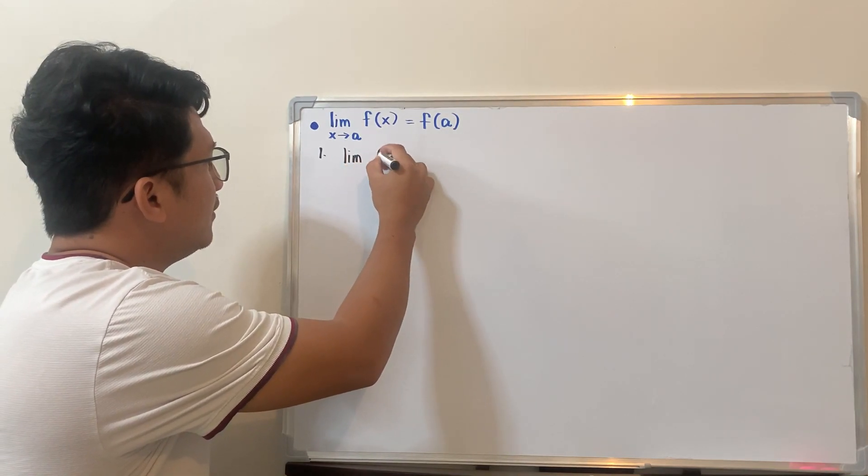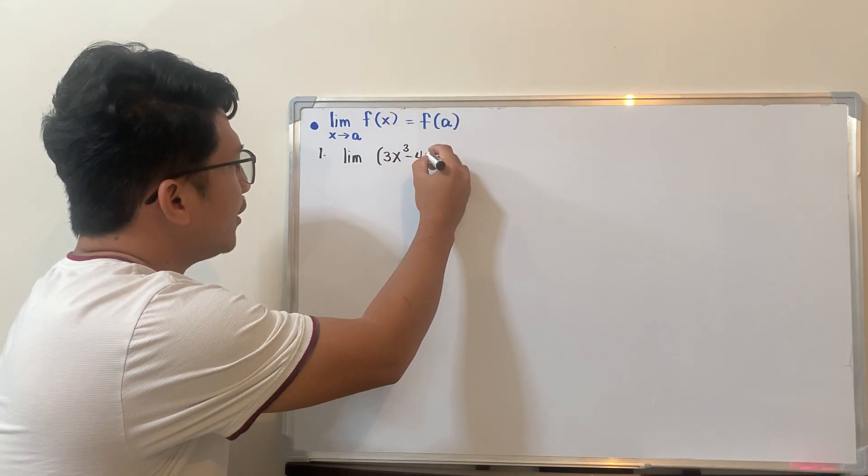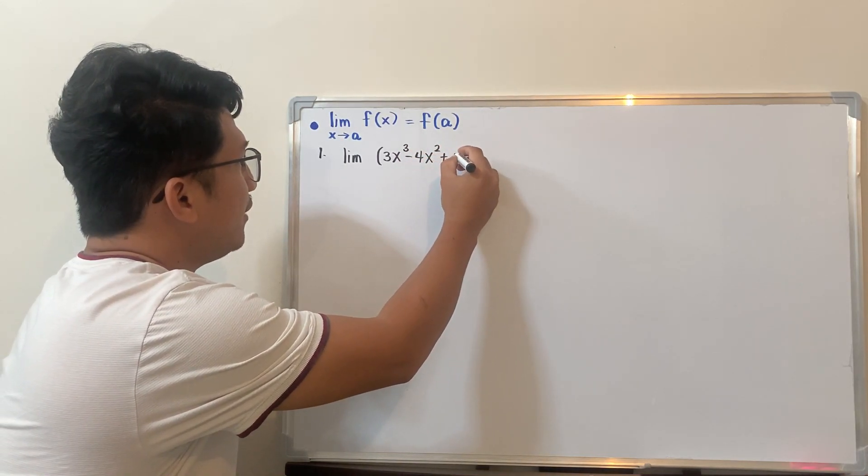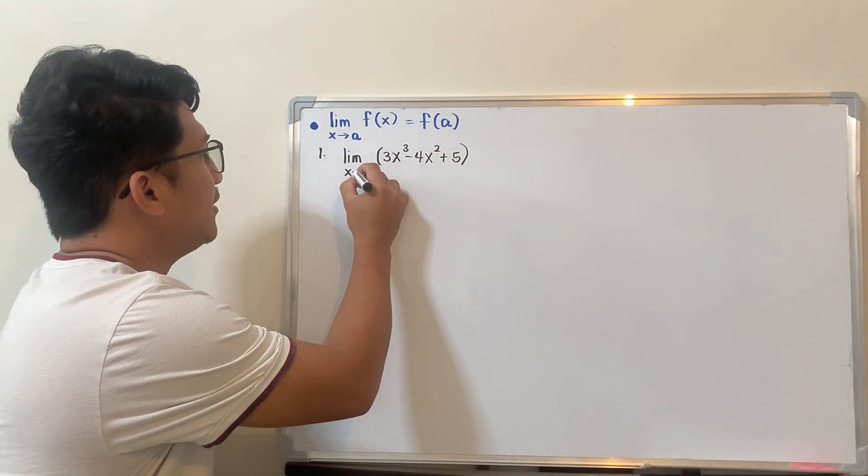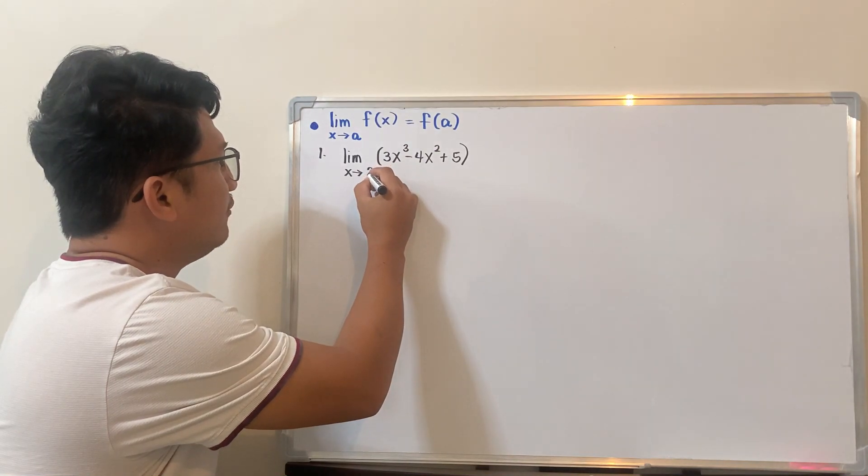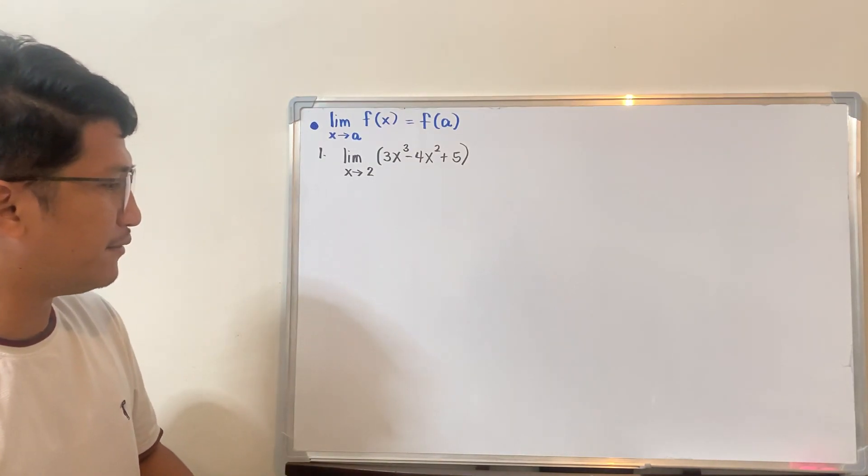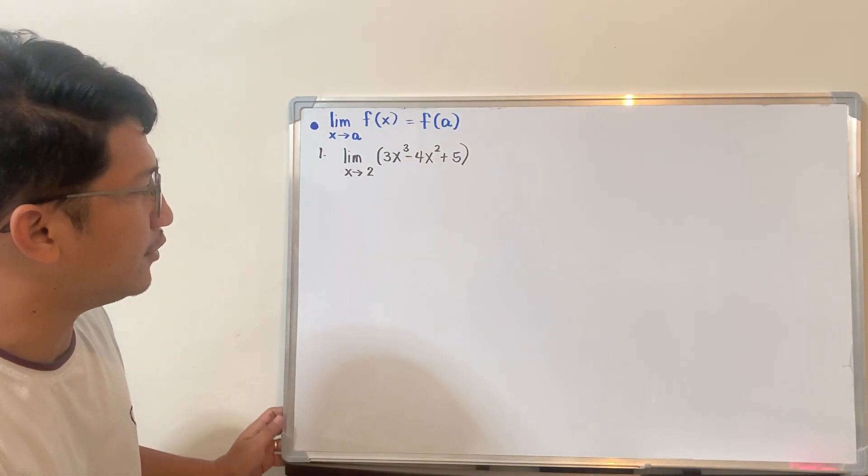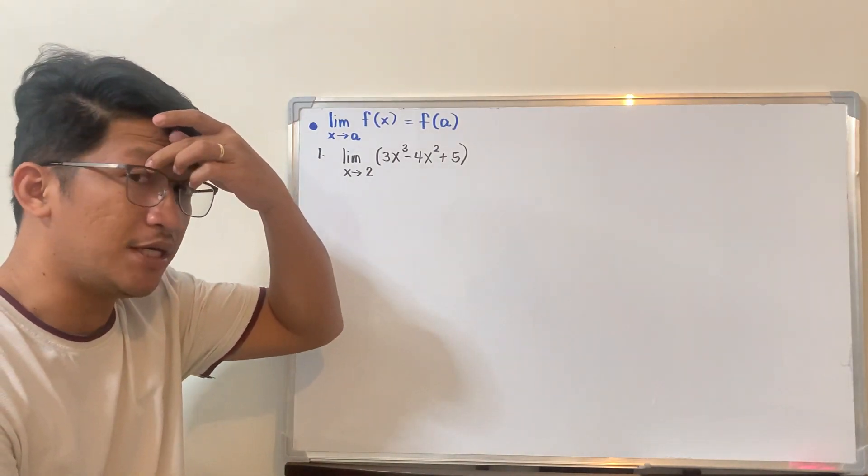3x cubed, no matter how complicated it would be, minus 4x squared plus 5, as long as it's polynomial, then that's easy using this method. If you have the number now, x must be approaching and will never be equal.